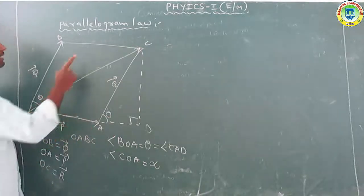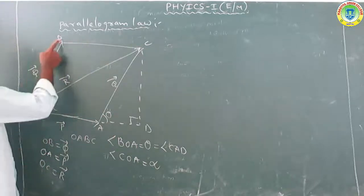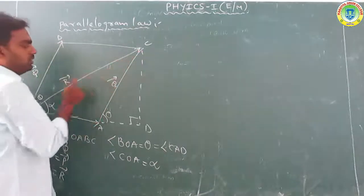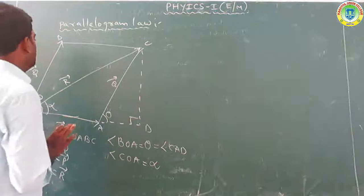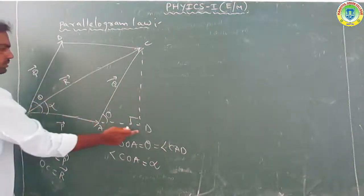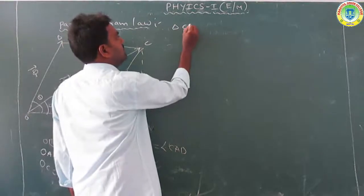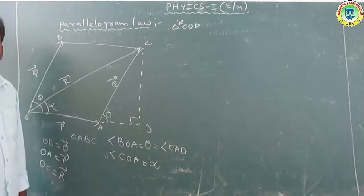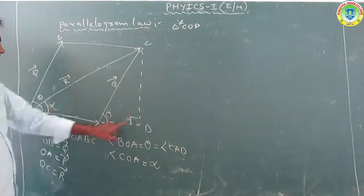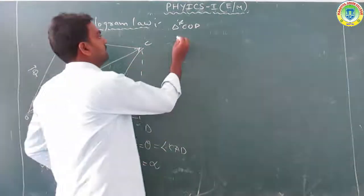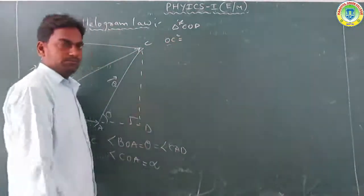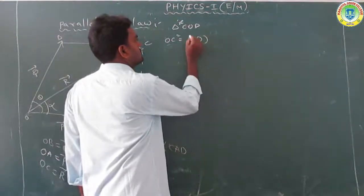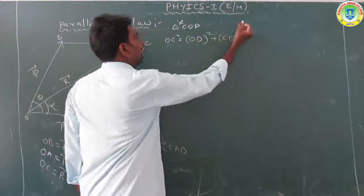OA is equal to P, OB is equal to Q, and similarly AC is equal to Q. From triangle OCD, OC² = OD² + CD². OD is equal to OA plus AD, so OD² = (OA + AD)². By using the (A+B)² formula, OD² = OA² + AD² + 2·OA·AD, and then plus CD².